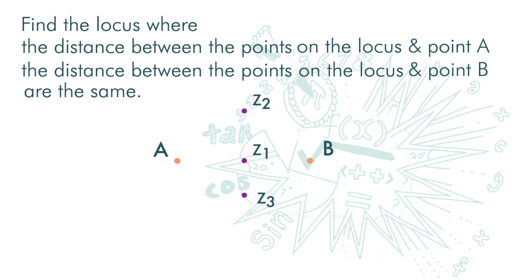If we join up these points, we will find that all the points on this line are of equal distance from point A and point B. So, this is the locus of points that are of equal distance from point A and point B.